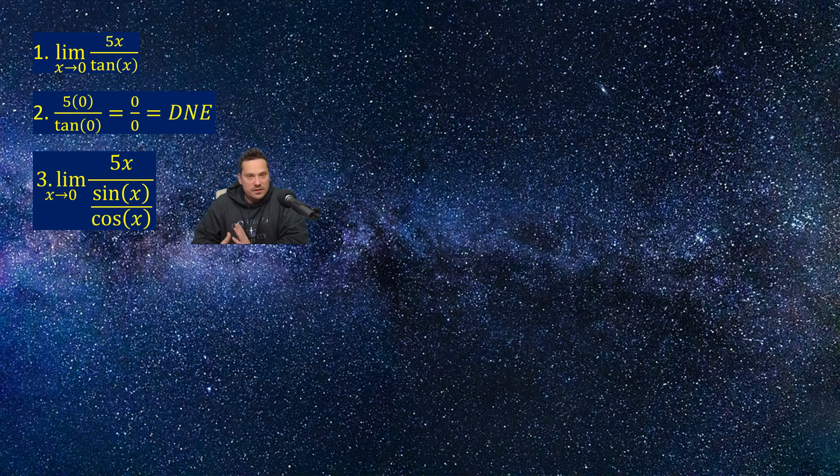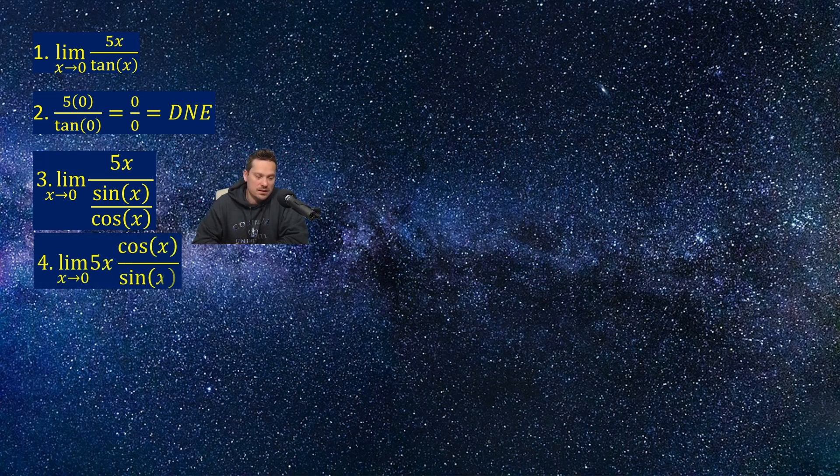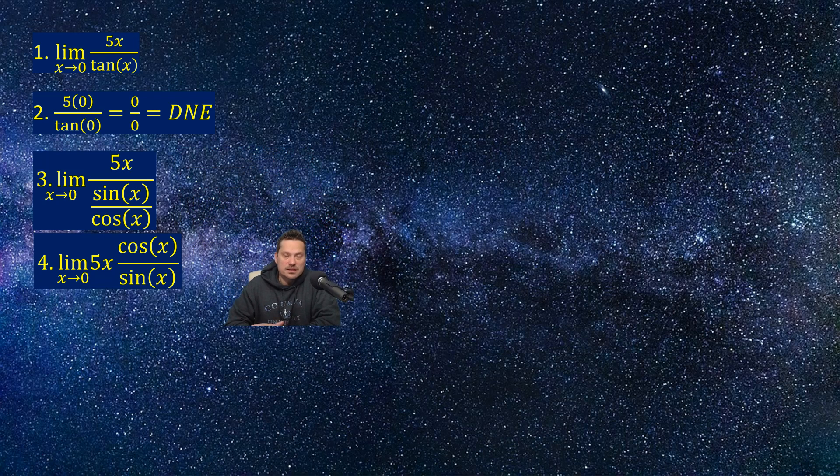What you want to do is just apply keep-change-flip, the usual fraction rule. So that's going to give you the next step that will look like this. You're going to end up with limit as x approaches 0 of 5x times cosine x over sine x. So again, to go from 3 to 4, you do keep-change-flip.